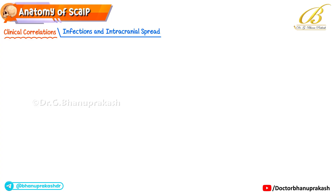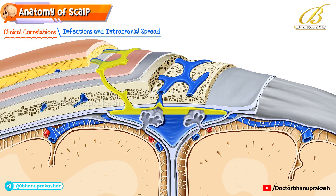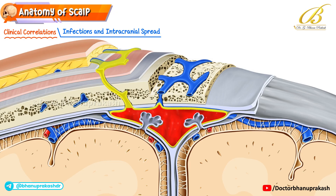The dangerous layer also explains how infections can spread intracranially. Pus or infected material in this plane can travel through emissary veins, which directly connect the scalp to the dural venous sinuses. This can lead to serious complications like septic sinus thrombosis.